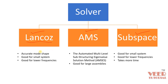The Lanczos solver gives very accurate mode shapes and is good for small systems and for finding lower natural frequencies. When we have a large assembly and need to find a higher number of natural frequencies, we use the AMS method. The subspace method is very similar to Lanczos but takes more time, so it is used when we need to find higher natural frequencies for small systems. Generally in industry, the Lanczos solver is most preferred.